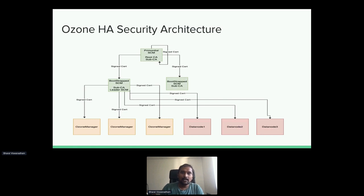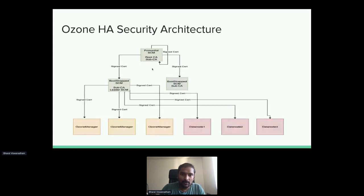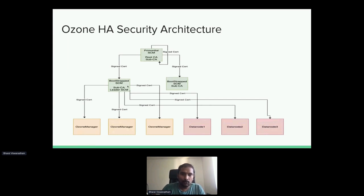In the Ozone HA security setup, with three SCMs, one is chosen as the prime bootstrap SCM which starts the root CA. The root CA issues certificates to the bootstrap SCMs — the bootstrap SCM makes a CSR request and gets a signed certificate from the prime SCM. When the prime bootstrap SCM becomes the leader, it issues certificates to OzoneManagers and data nodes in the cluster using its sub CA server.